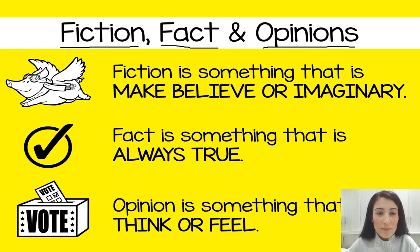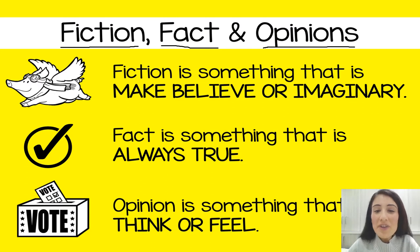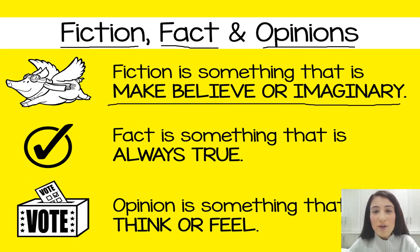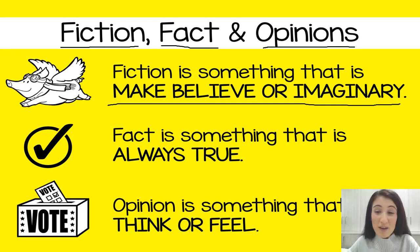If we have a look at the first one, there's a picture of a pig with wings, and I'll explain why. A fiction text is something that is make-believe or imaginary. If someone has made it up from their imagination, then it is fiction. That's why we've got a picture of a pig with wings here, because pigs don't really have wings and they can't really fly — so that must be make-believe, it must be fiction.